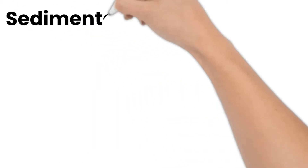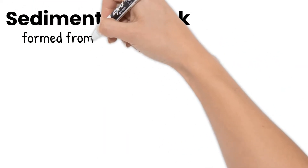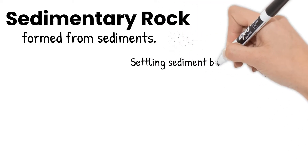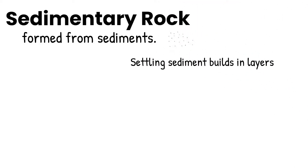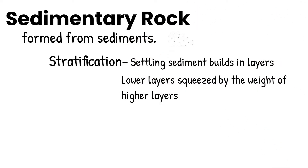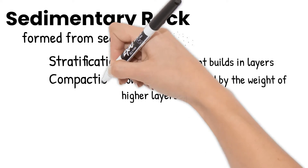First, sedimentary rocks. Sedimentary rocks are formed from sediments, which are small grains or particles. These sediments settle in lakes and rivers, and layers build as more and more sediment settles. This is called stratification. Lower layers are squeezed from the weight of higher layers in a process called compaction.